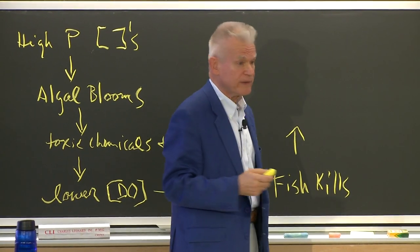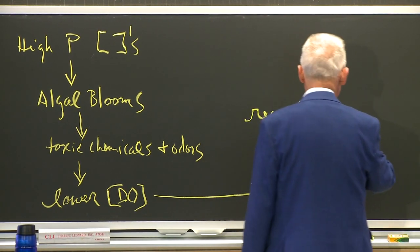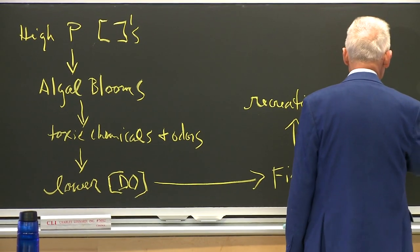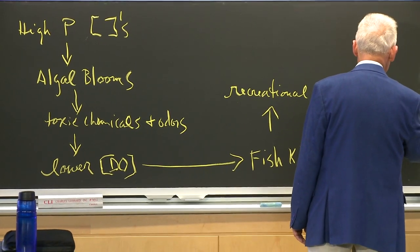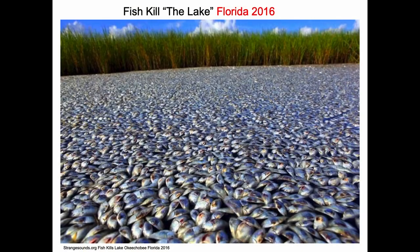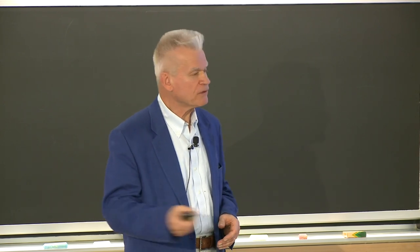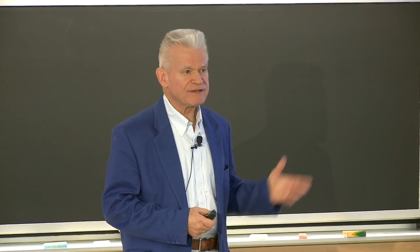That leads to fish kills and our recreational ability is impaired. Here are some examples of what I'm talking about. This is Florida, 2016. This is Lake Okeechobee, one of the largest freshwater lakes in Florida. This is a 30-mile-long fish kill involving some 50 species of fish. The cause, most probably, an algal bloom, the result of leaking septic systems and fertilizers from lawns going into the water. This is an economic disaster. It's going to take decades to recover from this.